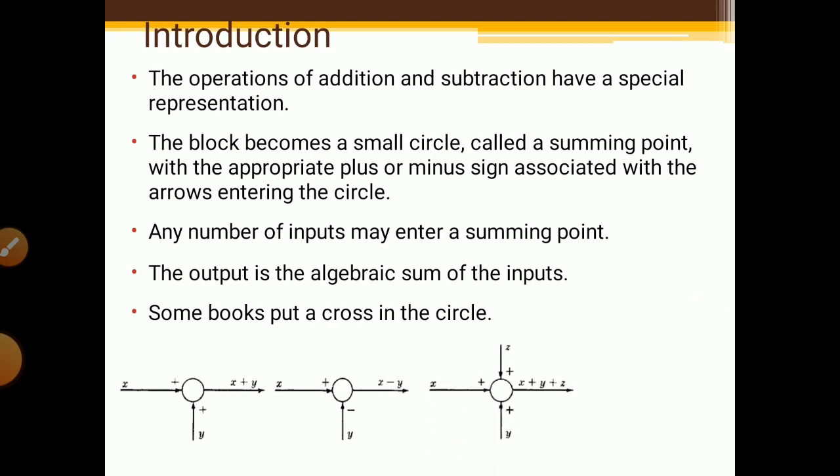In the third example, the circle has three inputs X, Y, and Z, all with positive signs, so the output is X plus Y plus Z. A fourth diagram shows two inputs with a cross written inside the circle — this is the same representation of a summing point. All four diagrams are summing points.